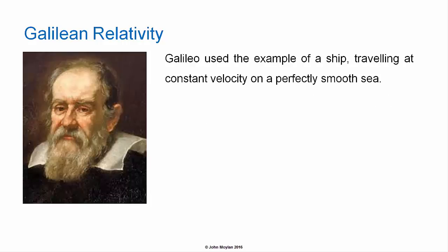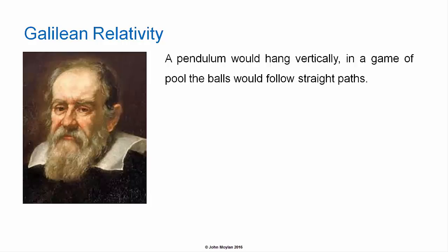Galileo used the example of a ship travelling at a constant velocity on a perfectly smooth sea. A pendulum would hang vertically. In a game of pool, the balls would follow straight lines.